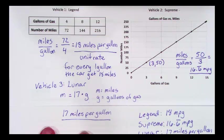In comparing all three of these, I can tell that the Legend gets the greatest number of miles in one gallon. The Lunar is second, and the Supreme is third.